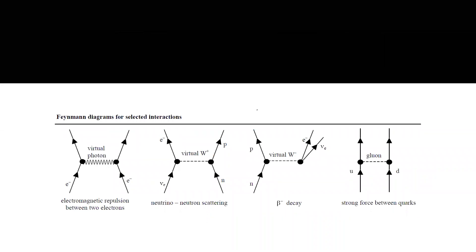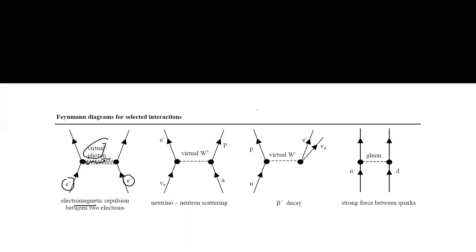This diagram represents particle interaction. For example, two electrons — like charges — repel each other. How do they repel? They exchange a particle, a boson known as a photon, because their interaction is electromagnetic and a repulsive force acts between them. This is how they apply force on each other by exchanging a photon.